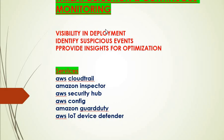Next is threat detection and continuous monitoring, which provides visibility into deployments, identifies suspicious events, and provides insights for optimization. Major services include AWS CloudTrail, Amazon Inspector, AWS Security Hub, AWS Config, Amazon GuardDuty, and AWS IoT Device Defender. These services provide visibility into your deployment operations, identify suspicious events, ensure performance standards, and provide insights for optimization.